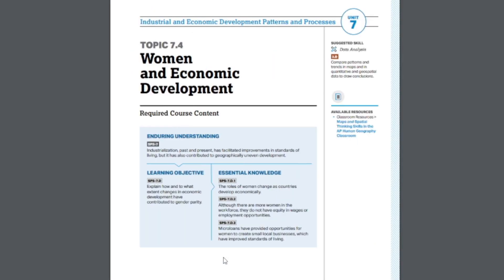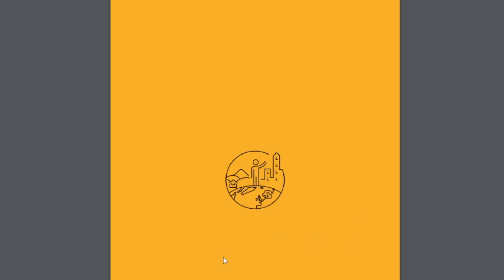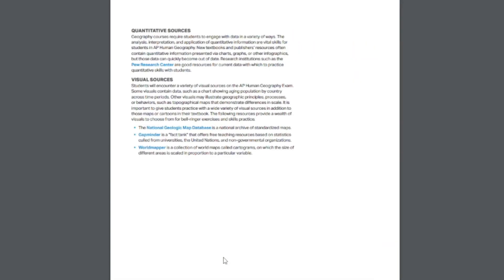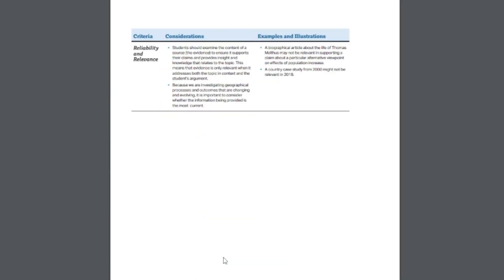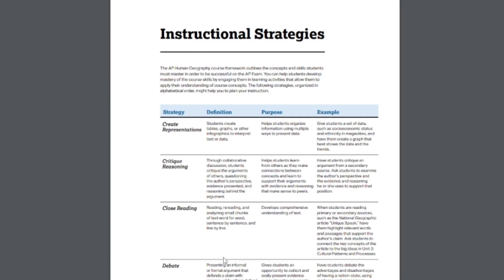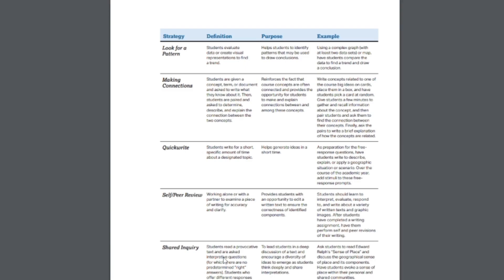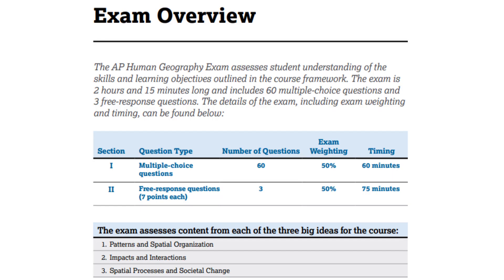Once you get past the units, you'll stumble across the instructional approaches section. This is mainly for teachers who are teaching the class and doesn't serve you much as a student, so you can skip it. Stop when you get to exam information, because that's way more important to you than to a teacher — they're not the ones taking the brutal exam in May.